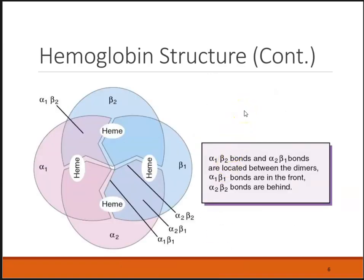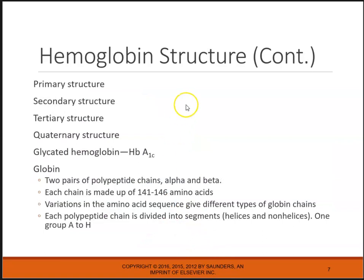The globin part of hemoglobin is usually two alpha chains and two beta chains — that's normal hemoglobin, hemoglobin A. The heme molecules are attached on the surface of the hemoglobin molecule. The structure of hemoglobin goes through different phases — primary, secondary, tertiary, and quaternary structure. There is one hemoglobin molecule, and in the A1C position is where we actually hold glucose. It's called hemoglobin A1C or glycated or glycosylated hemoglobin, and this is used to measure glucose in diabetics to monitor how they're controlling their glucose.